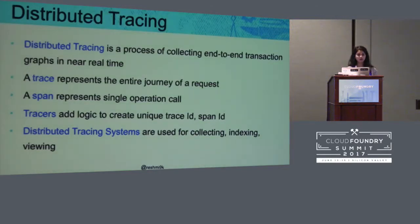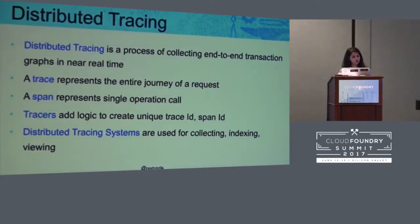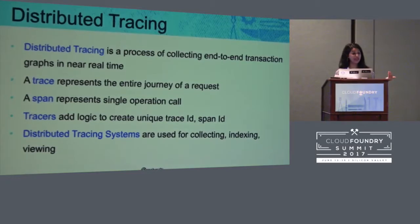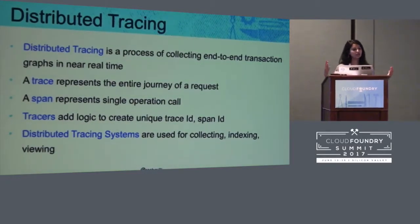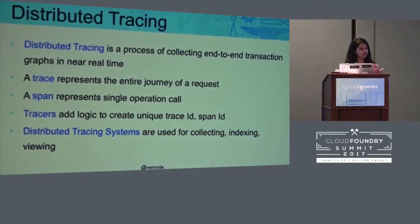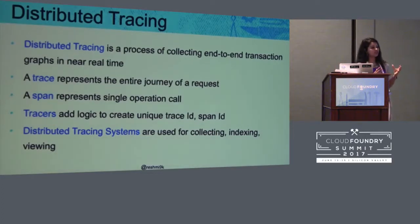Distributed tracing is the process of collecting end-to-end transaction graphs in near real time. A trace represents the entire journey of a request. For example, if request A goes to three different microservices, the trace constitutes the whole journey, whereas a span is just for one microservice — a single operation call. So request A hitting microservice X is one span, hitting Y is another span, and the aggregation of those is a trace.